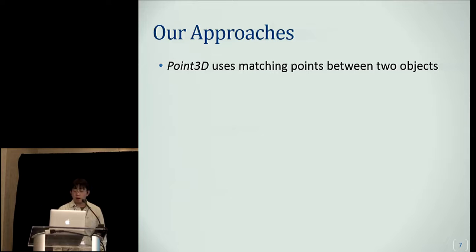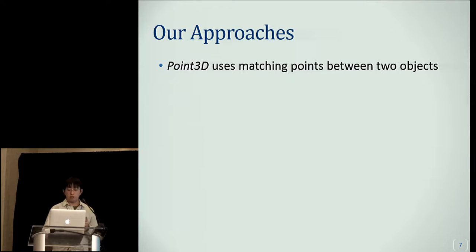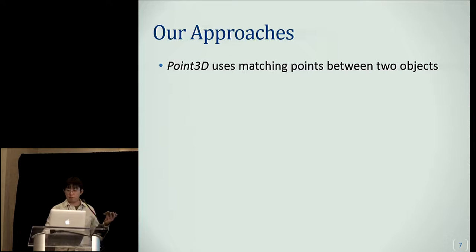Our two approaches are based on concepts similar to how a co-located SME would instruct the user. The first one is Point3D, in which the SME indicates which points are supposed to touch between two objects. As an example, with a universal charger and an iPhone, the SME tells you that you're supposed to insert the charger into this hole.